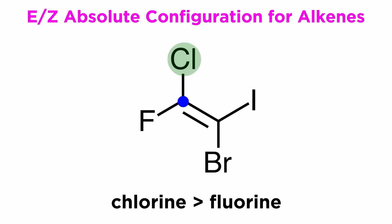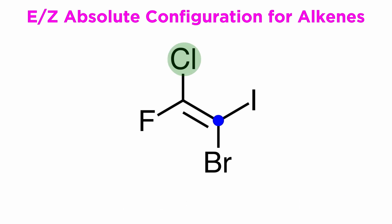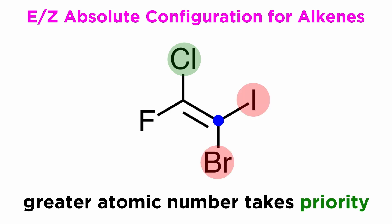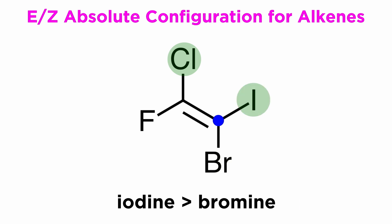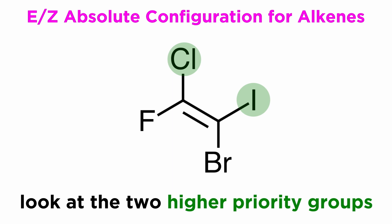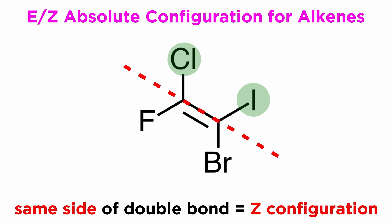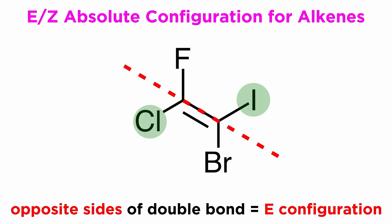This one is higher, so it is of higher priority. Now look at the other carbon in the double bond and consider the two groups connected to it. Do the same thing as we did with the first carbon — this one is higher, so it is higher priority. Now look at the two groups with higher priority. As they are on the same side with respect to the plane that contains the double bond, this is a Z-alkene. If they were to be on opposite sides of that plane, it would be an E-alkene.